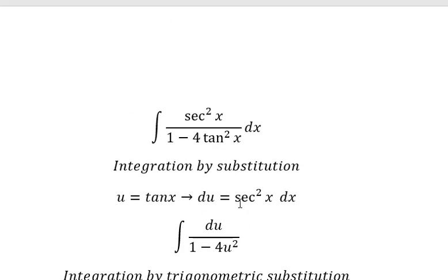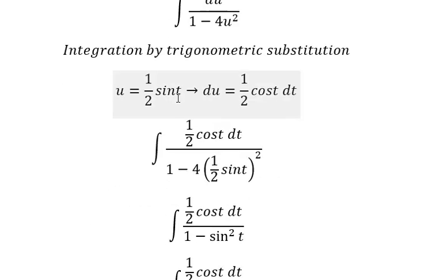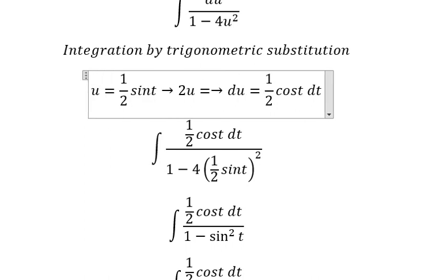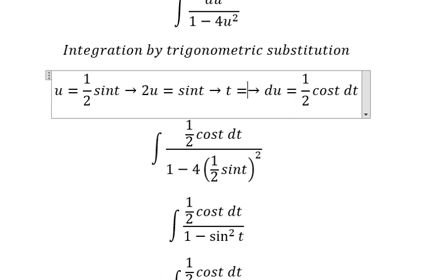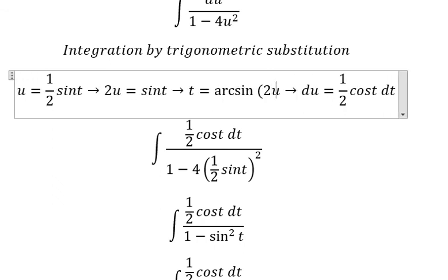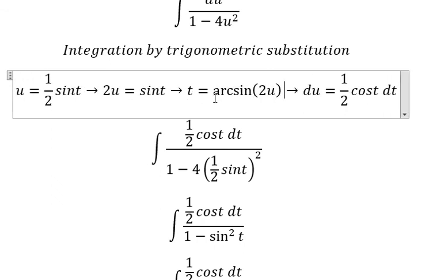For t, this one we multiply both sides by 2, and then you get t equals arcsin of 2u. So I will put this one to change for t.